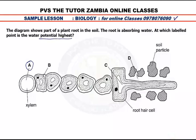Option A is the xylem. Even though the xylem transports water, that water comes from somewhere else, so A is out. Option B is the cytoplasm. We know that the cytoplasm has a gel-like fluid, but water there is not really high, so B is out.